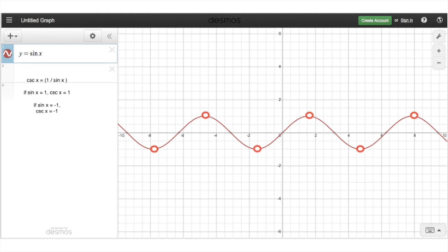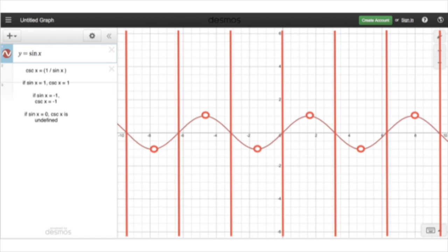On the other hand, if the sine is 0, the cosecant's not going to be defined at all. And so everywhere where the sine is equal to 0, which is where I put those lines, there are asymptotes there.